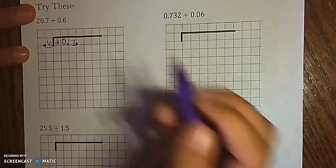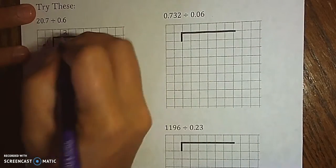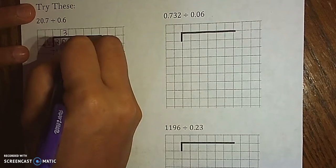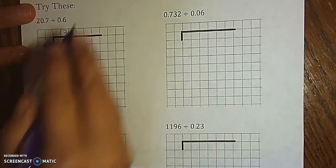6 goes into 20 three times. That gives you 18. Bring down, 20 minus 18 is 2, bring down the 7.